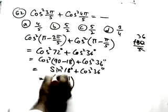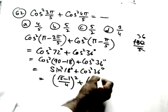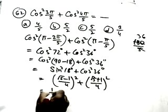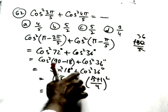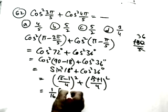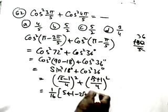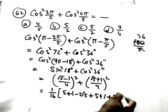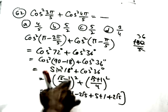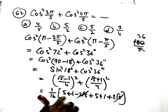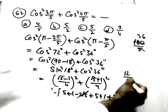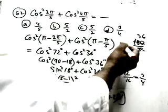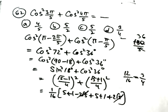Sin 18° = (√5−1)/4, so sin²18° = ((√5−1)/4)² = 1/16 · (5 + 1 − 2√5). And cos 36° = (√5+1)/4, so cos²36° = ((√5+1)/4)² = 1/16 · (5 + 1 + 2√5). Adding them: the 2√5 terms cancel, giving 1/16 · 12 = 12/16 = 3/4.